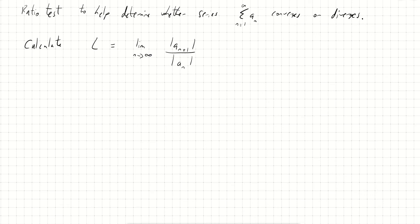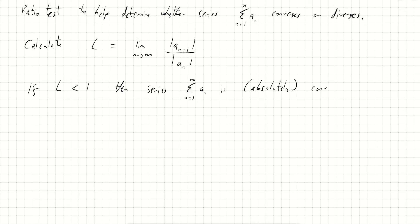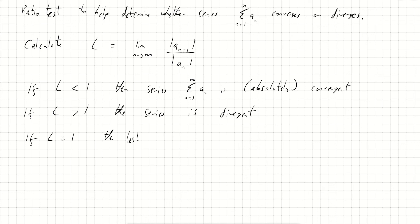It's one of many tests you can use to see if a series is convergent or divergent. It doesn't always give the answer, but in some cases it is very helpful. We calculate L, which is the limit as n tends to infinity of |a_{n+1}| over |a_n|. There are three options: if L is less than one, the series is convergent (absolutely convergent); if L is greater than one, the series is divergent; and if L equals one, the test provides no information on convergence.